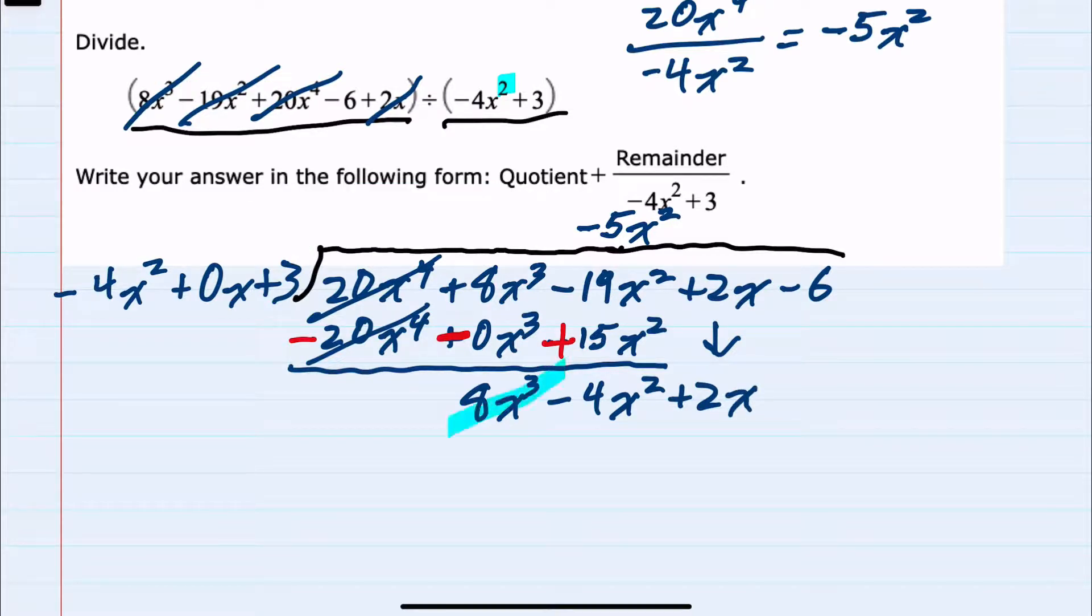And again, we would look at the leading terms to divide. This time, I would have 8x³ divided by that minus 4x². 8 divided by minus 4, a negative 2. x³ divided by x² is x. So our next term is a minus 2x.